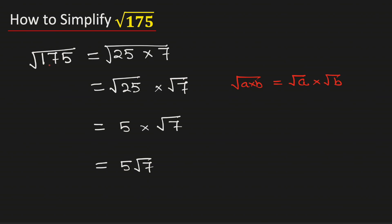Therefore, square root of 175 in simplified radical form is equal to 5 root 7, and this is our final answer. Thank you for watching.